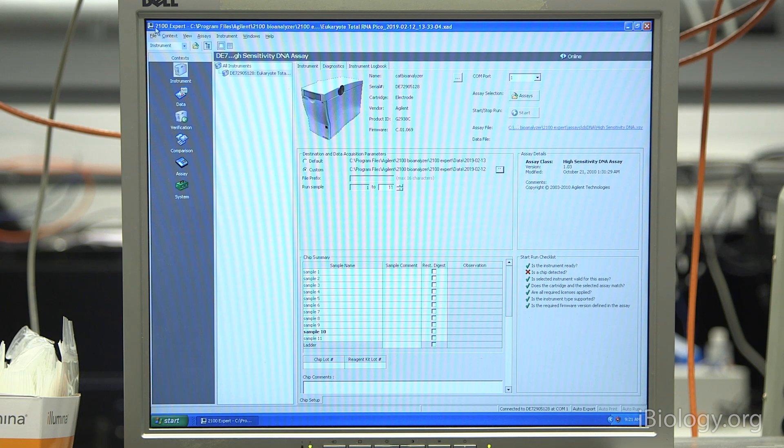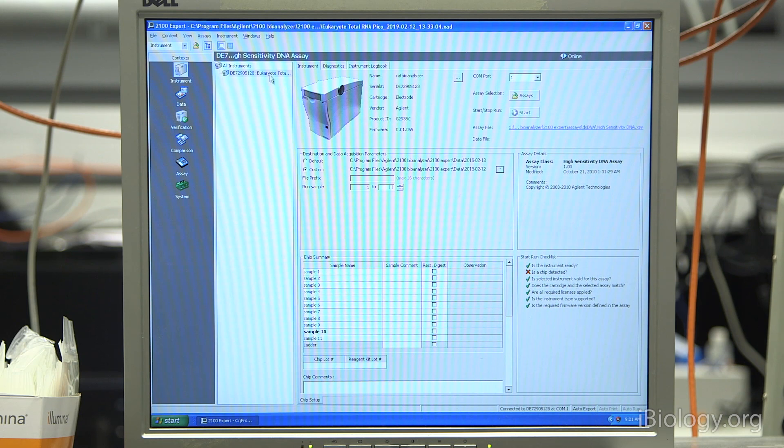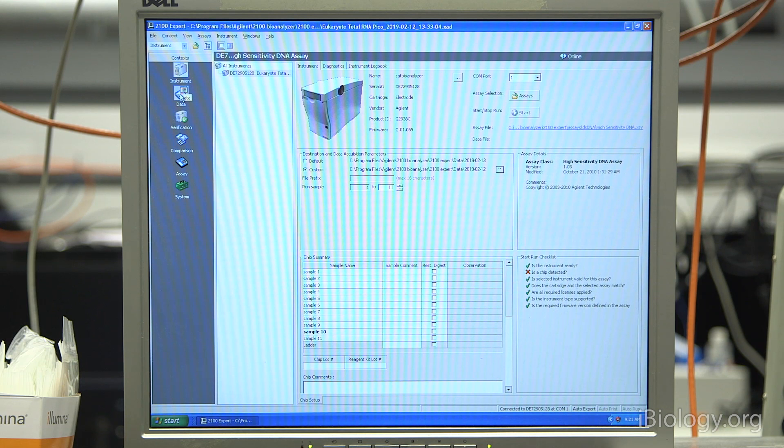The software that runs the Bioanalyzer is the 2100 Expert software. When you open up the software, it will automatically connect to the Bioanalyzer instrument. On the left are a set of icons that you can use to navigate to different areas of the software. To set up the run, you want to make sure you click on the instrument icon. On the instrument icon, again, you'll see a picture of the Bioanalyzer. And the first thing you want to do is select the assay that you're running.